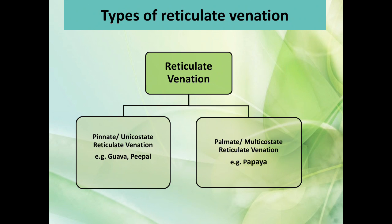Types of reticulate venation: there are two types — pinnate or unicostate reticulate venation, for example in guava and peepal, and palmate multicostate reticulate venation, for example in papaya.